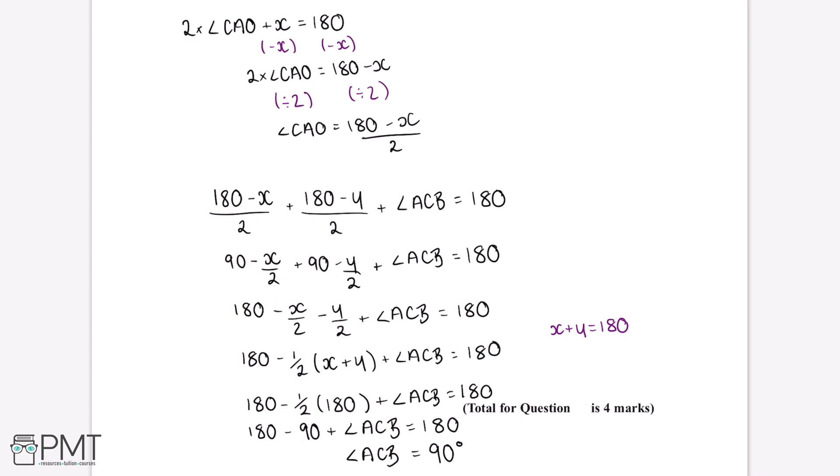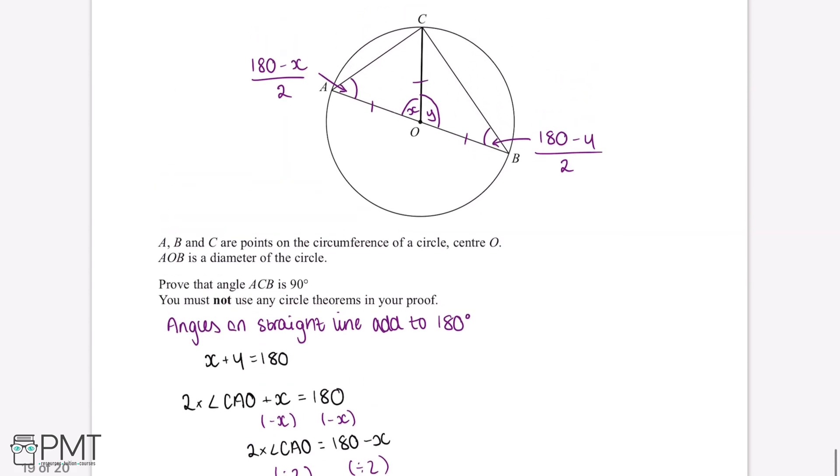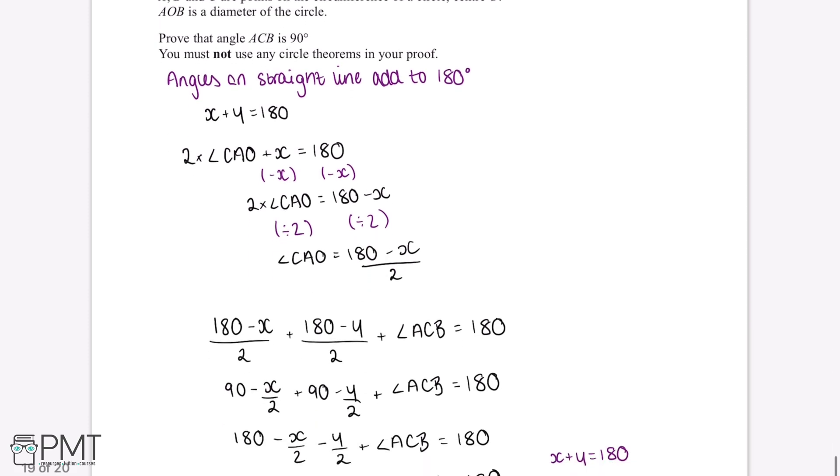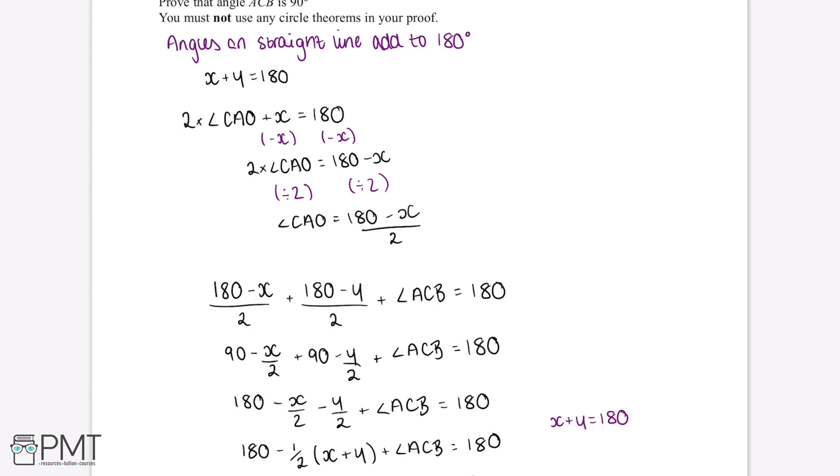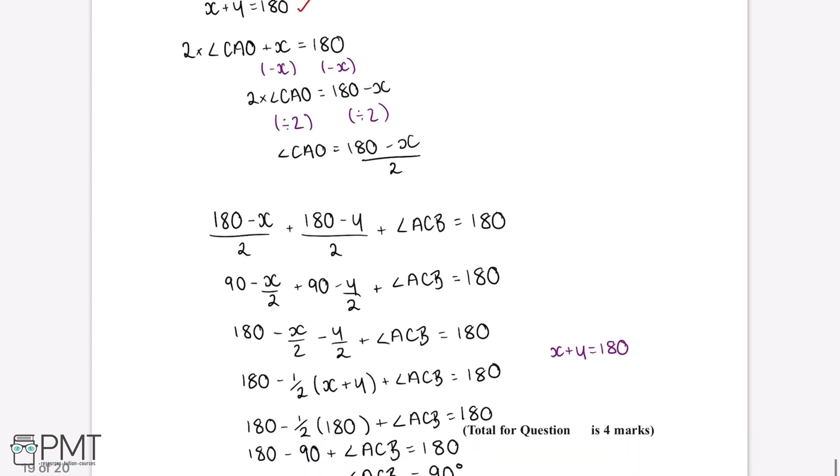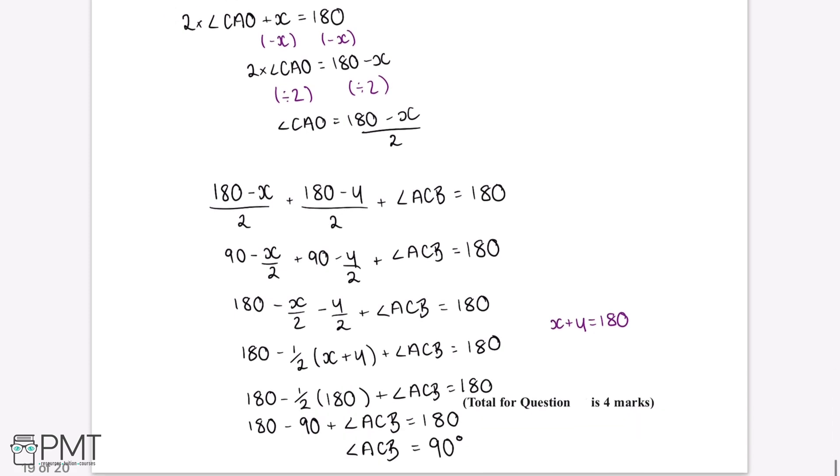That is our final proof. This question is worth four marks. We'll get one mark for splitting this triangle into two separate triangles. We'll get our second mark for showing the sum of the angles at point O in terms of X and Y. We'll get our third mark for a complete method showing the angle ACB is equal to 90 degrees.